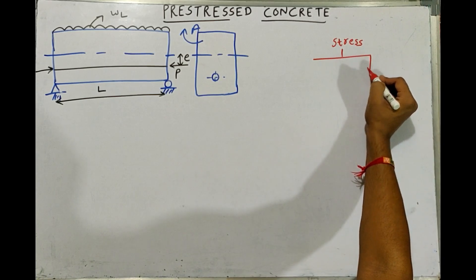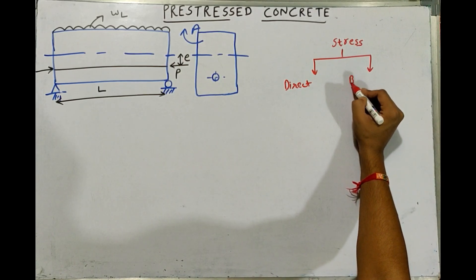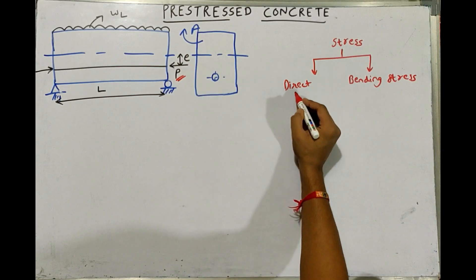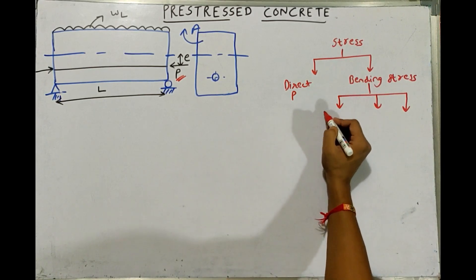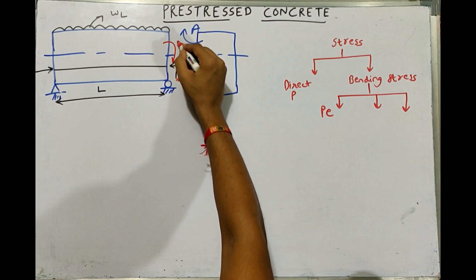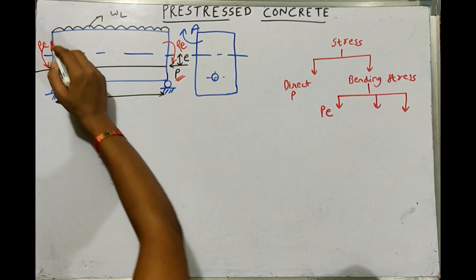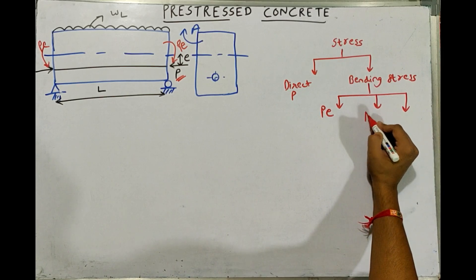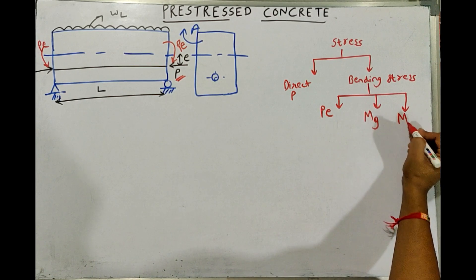In pre-stressed concrete beams, there are two types of stresses acting. The first one is the direct stress and the second one is the bending stress. The direct stress is due to the pre-stressing force P, and bending stresses are due to three reasons: first, the pre-stressing moment P×E; second, the dead load moment Mg; and third, the live load moment Mq. The pre-stressing force P produces a hogging moment P×E about the neutral axis.